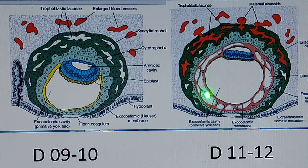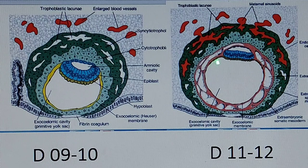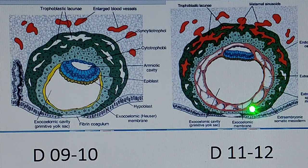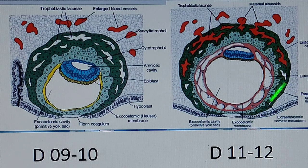In this extra-embryonic mesoderm, there is some cavity — this cavity is known as the extra-embryonic cavity. There are two linings: the layer very close to the primitive yolk sac is known as the splanchnic layer of the extra-embryonic mesoderm, and the layer very close to the cytotrophoblast is known as the somatic layer of the extra-embryonic mesoderm.